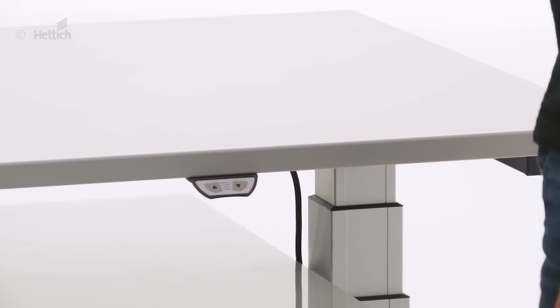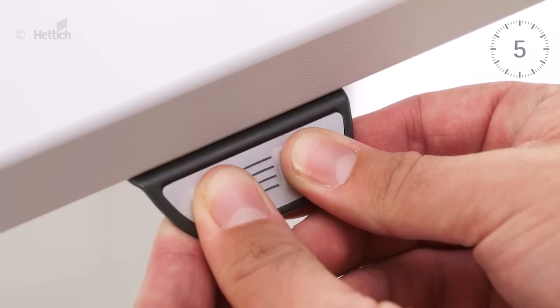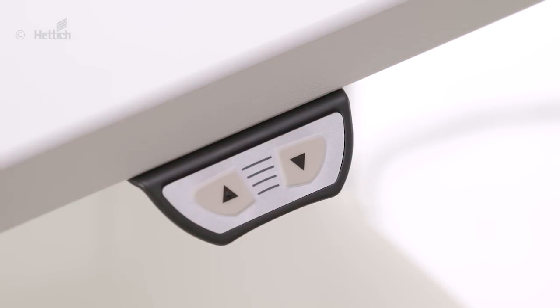You can also reset this function by pressing the buttons of the handset for 10 seconds at the lowest position. When the control unit clicks, the stop position is deleted.